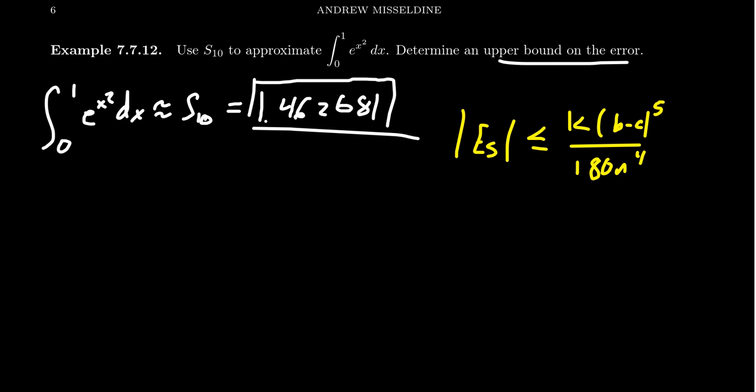Some of these things we know off the bat. b minus a is the length of the interval, so we get this portion right here: 1 minus 0 to the fifth. 1 minus 0 of course is 1, so that's just going to disappear. Then we get 180 over, we're taking 10 subdivisions, so 10 to the fourth.